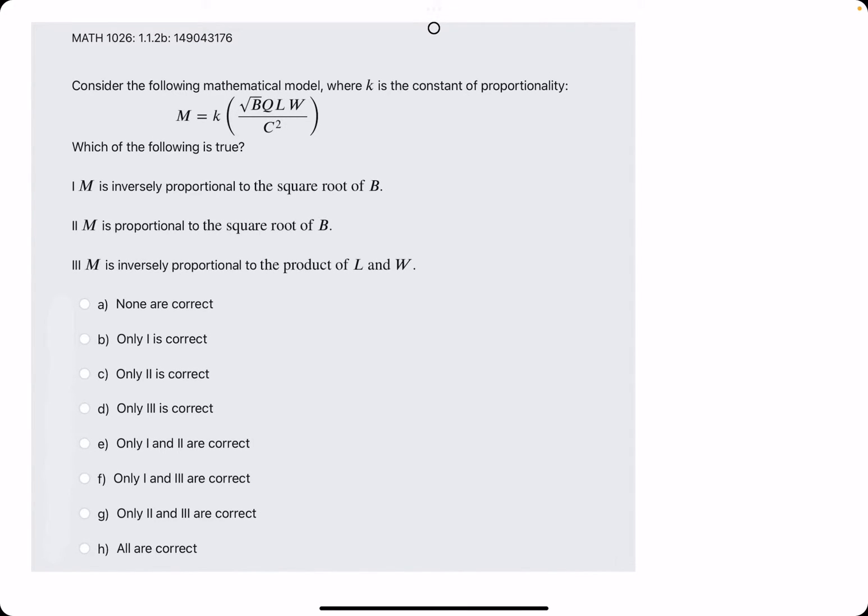M is inversely proportional to the square root of B. That means that the square root of B should be in the denominator somewhere, but I do not see it in the denominator. We do see it in the numerator.